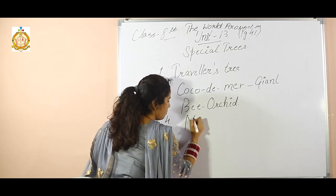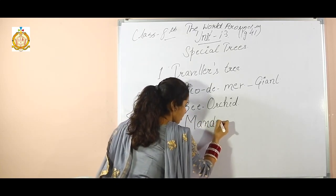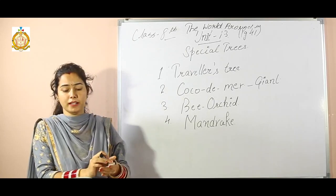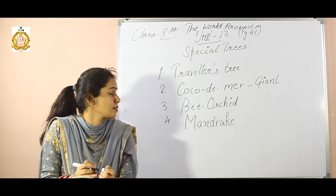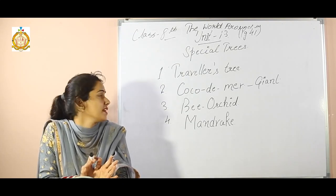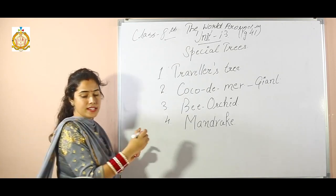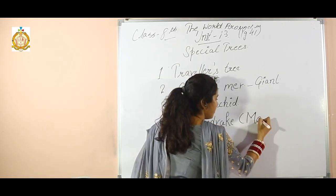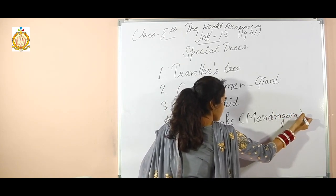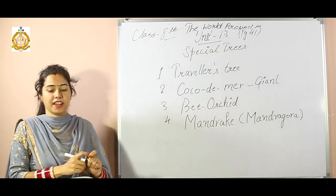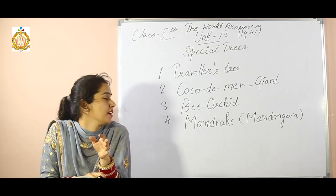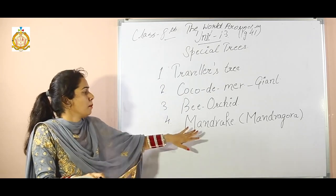The next plant is Mandrake. This plant is very interesting because its roots look like a human baby when the plant is young. It is also known as Mandragora. People believe that when this plant matures, its cry can be fatal to any person who hears it.